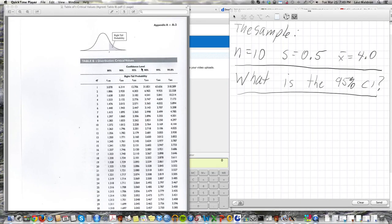This mini-tutorial shows how to calculate a confidence interval for a sample using a t-table by hand. I'm going to start with the information that we have a sample with 10 observations, n equals 10, standard deviation estimated from that sample of 0.5, and a mean estimated from that sample of 4.0. And the question we're going to answer is, what is the 95% confidence interval?